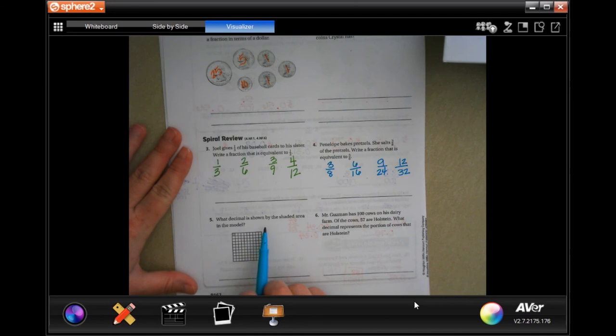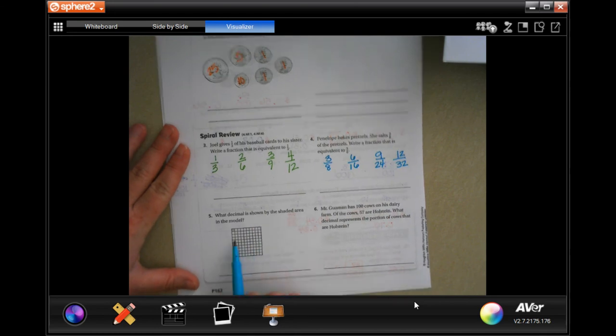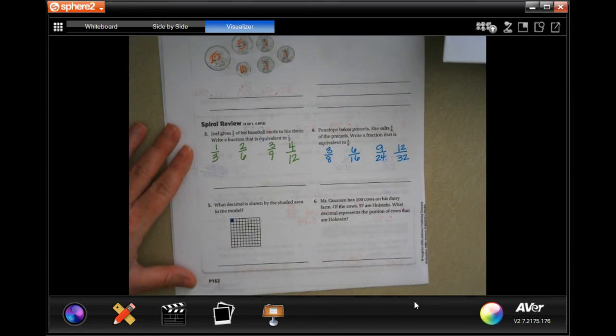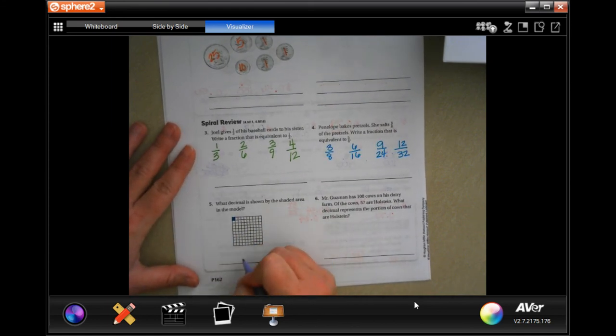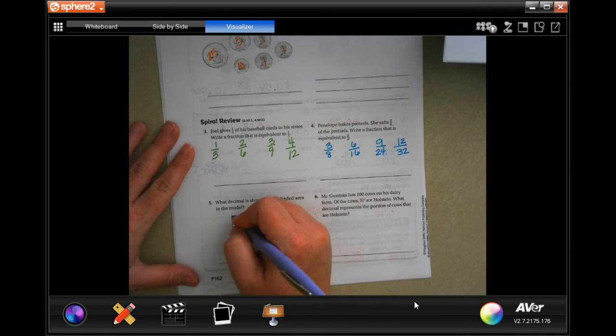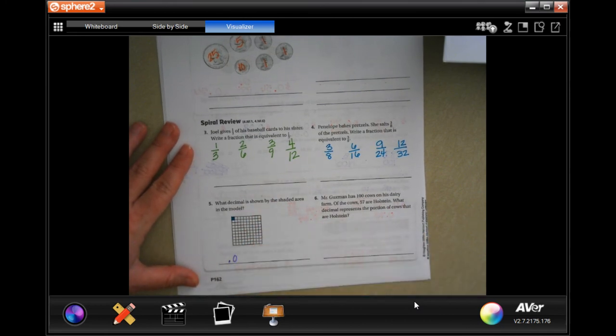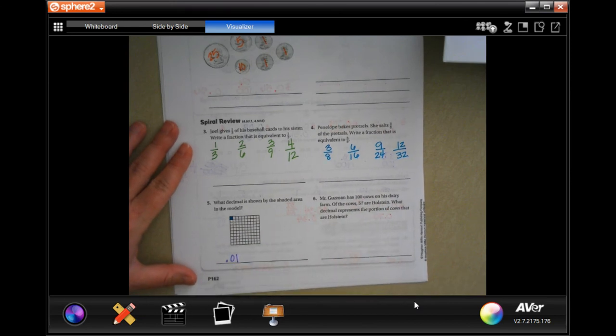What is the decimal shown by the shaded area in the model? Well, there's only one square in this whole thing shaded in. So, there is a decimal. There is no ten. A ten is a whole stick of these shaded in. So, there isn't a whole one shaded in. And there's just one square. That's it, guys.